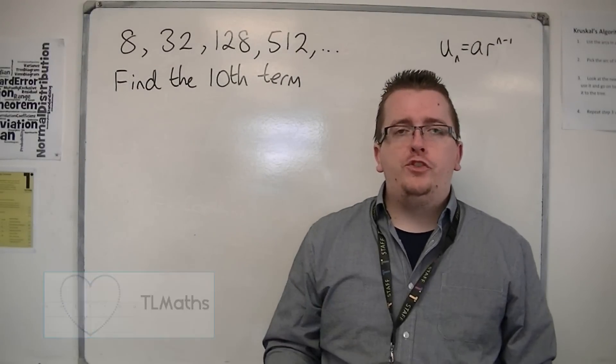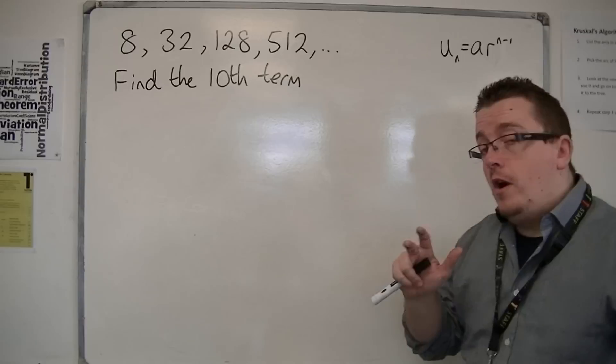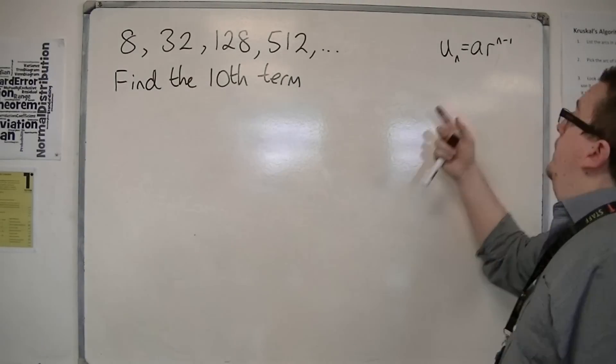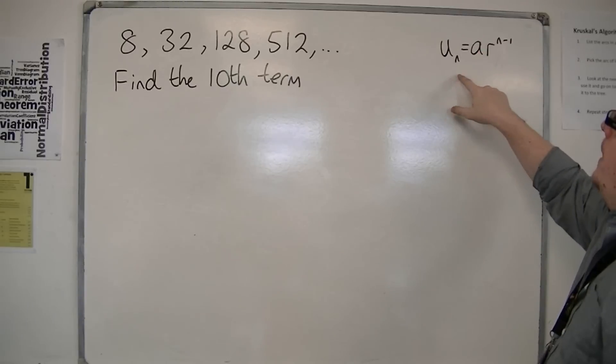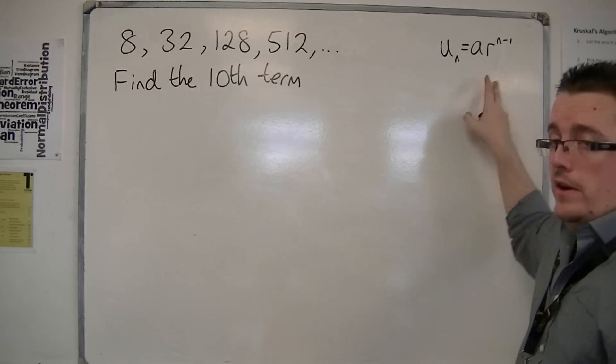In the previous video, I introduced geometric sequences, and we arrived at a generalized nth term that looks like this: un equals ar to the n minus 1.